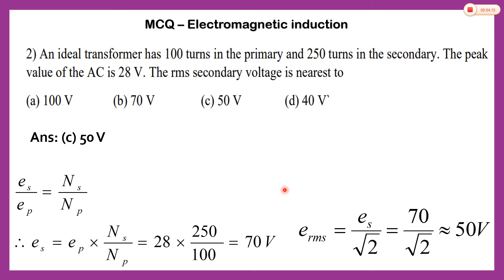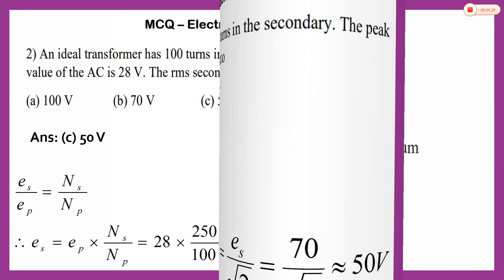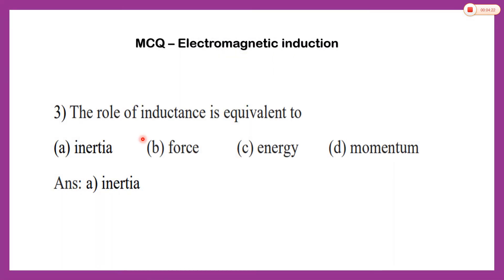That is why your answer is not 70 volts but 50 volts is the correct answer. The next question is again a theoretical question: the role of inductance is equivalent to — the four options are inertia, force, energy, and momentum. The correct answer is inertia.